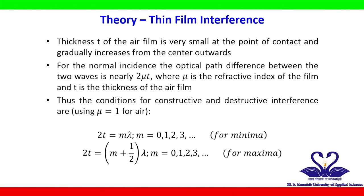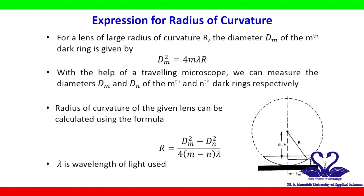Constructive interference occurs when the path difference is equal to integral multiples of wavelength, and destructive interference occurs when the path difference is equal to half integral multiples of wavelength. The diameter dm of the m-th dark ring is related to the radius of curvature R of the plano-convex lens by: dm² = 4mλR.